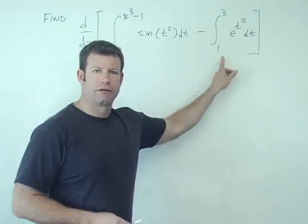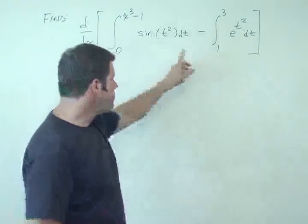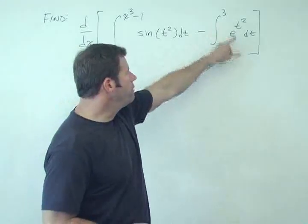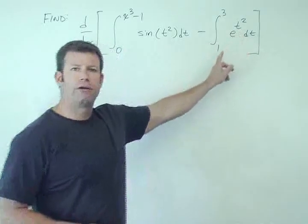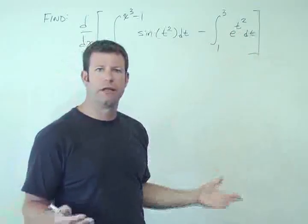Let's do this part first because it's the low-hanging fruit. The integral from 1 to 3 of e^(t²) dt is some area, right? But it's an area, it's a number.